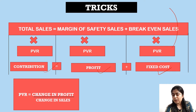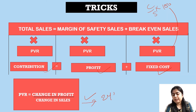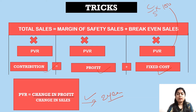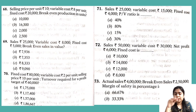In the PVR category, PVR is calculated as contribution upon sales into 100. When two years' data is given, you use: Change in Profit divided by Change in Sales equals PVR. This formula is used when two years' profit and sales figures are provided — find the difference and divide them to get the PVR.